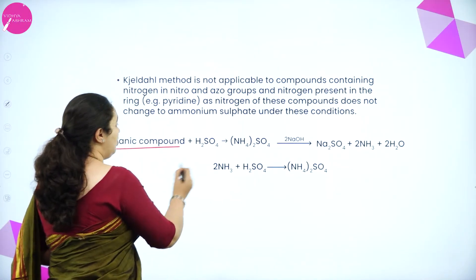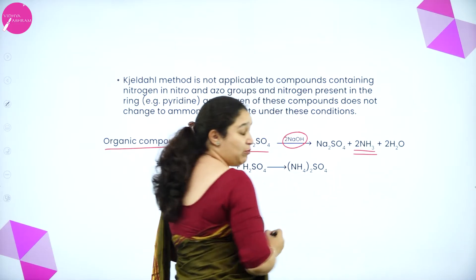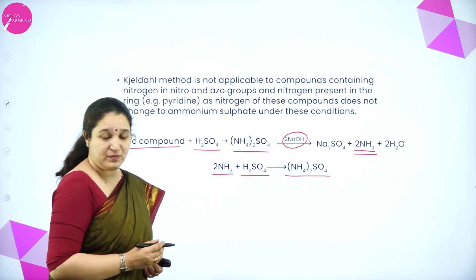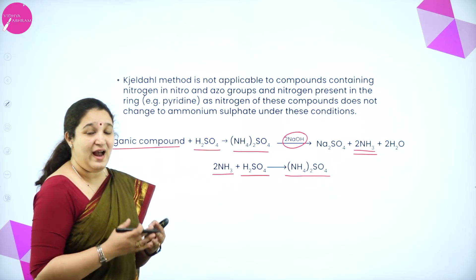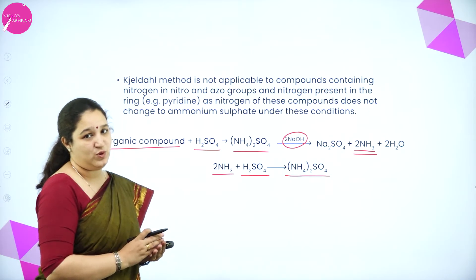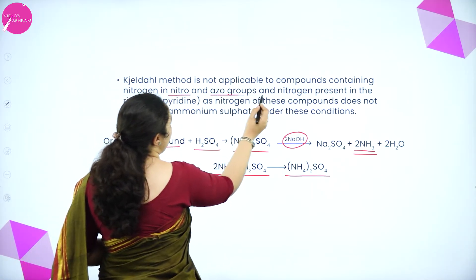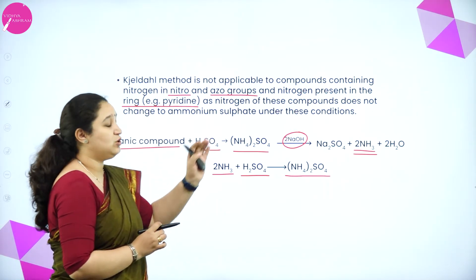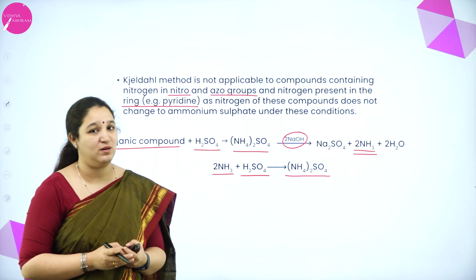So the procedure is: treat the organic compound with sulfuric acid to form ammonium sulfate, treat with sodium hydroxide to liberate ammonia gas, absorb the ammonia in standard sulfuric acid, titrate remaining acid against alkali. Note: Kjeldahl's method is not applicable for nitro compounds, azo compounds, and nitrogen present in the ring like pyridine, because nitrogen in these compounds does not get converted to ammonium sulfate.